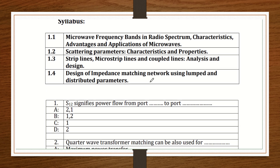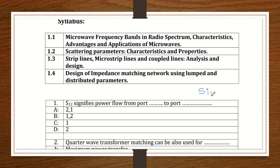Question number 1: S12 signifies power flow from which port to which port? If you remember the generalized expression S_ij — where i is the output port and j is the input port — then you can tell what every S12, S22, S13 means and how power flows. For S12, the output port is 1 and the input port is 2, so power is flowing from port 2 to port 1. That means option A is correct.